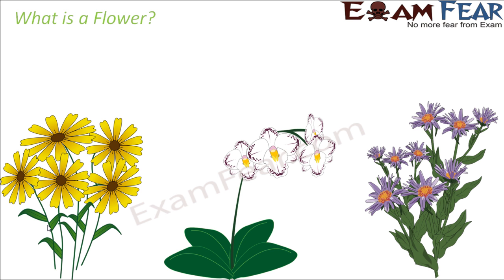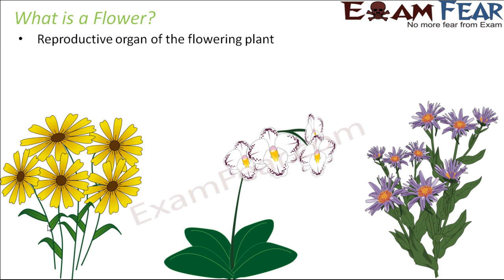What is a flower? We all see a lot of beautiful flowers around us — red, green, blue, yellow in colors. These are the reproductive organs of the flowering plant, so you can understand how crucial a flower is for the plant, because if there is no flower, the plant will not be able to reproduce and give rise to new plants.